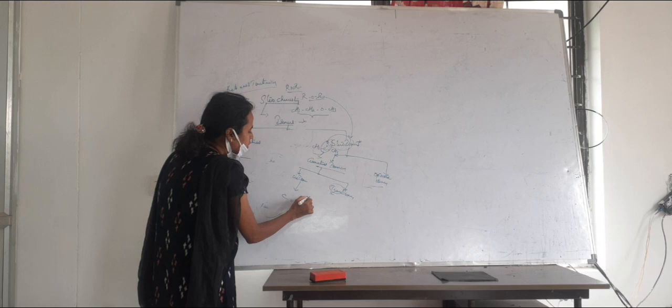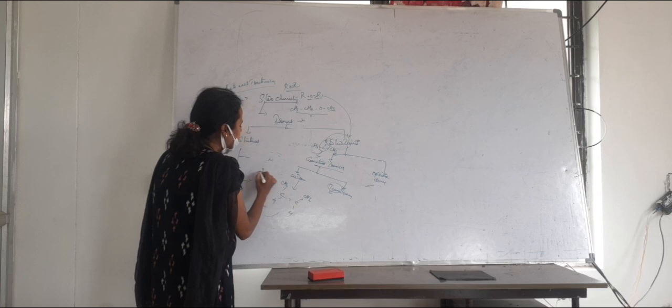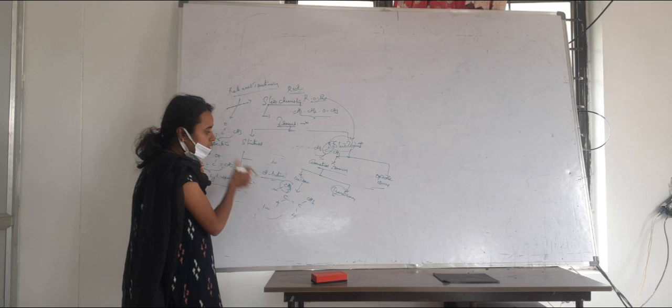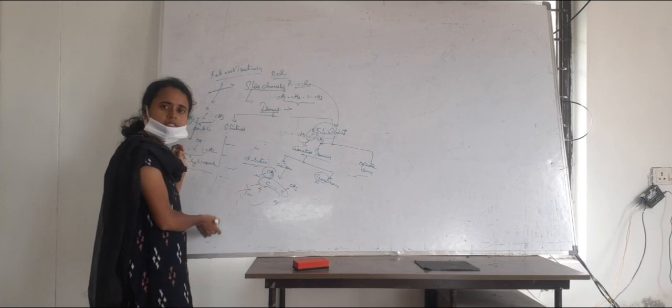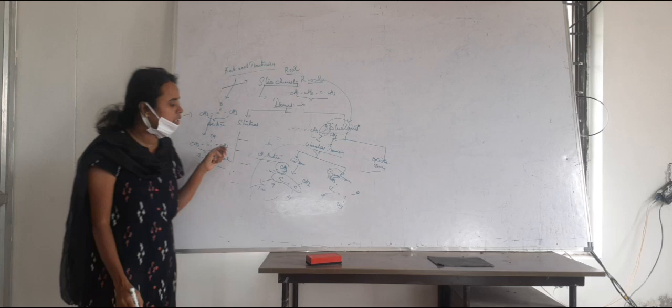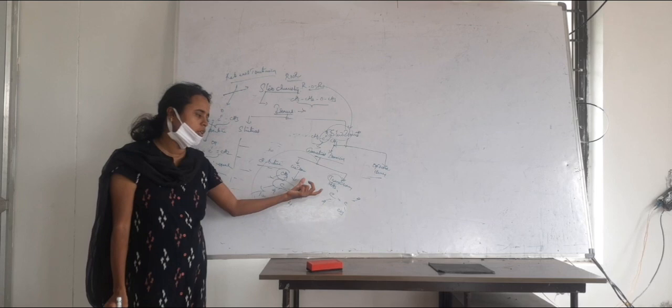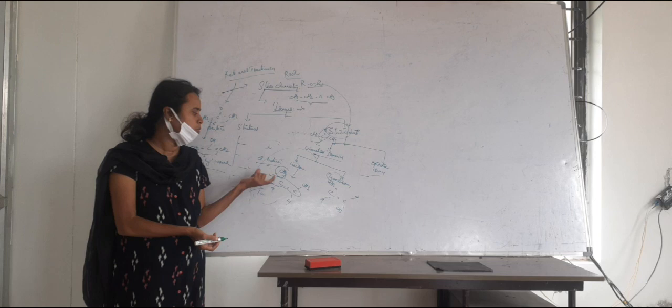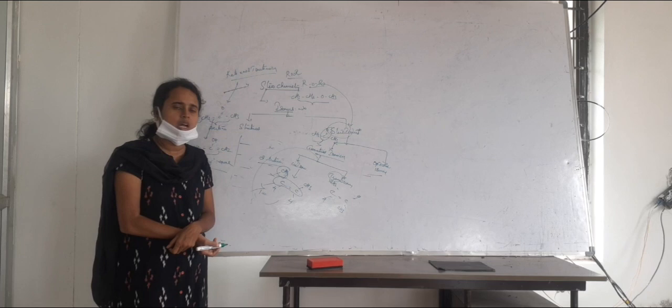For example, if we take the molecule 2-butene, the two bulkier groups present on the same side of the double bond gives cis-2-butene. If they are present on the opposite side of the double bond, they are said to be trans-2-butene. Generally, trans isomers are more stable compared to cis isomers because steric repulsion is less in trans isomers, since the bulkier groups are on opposite sides.